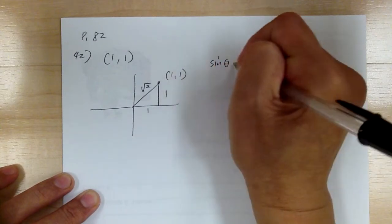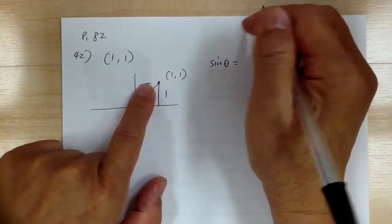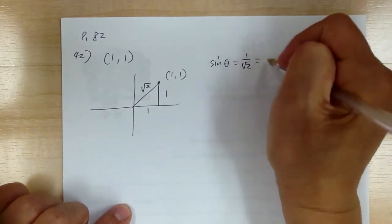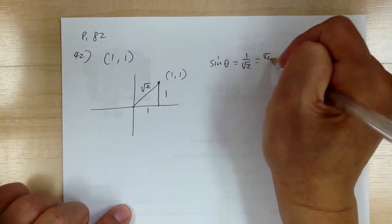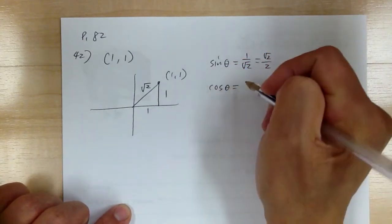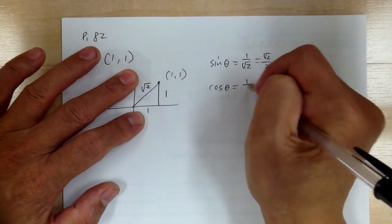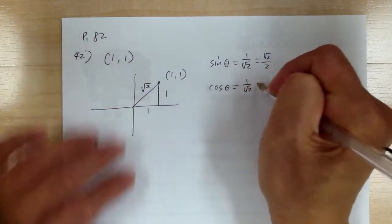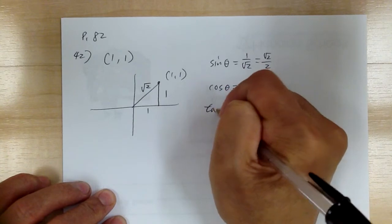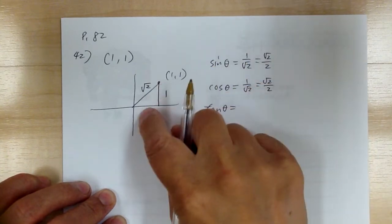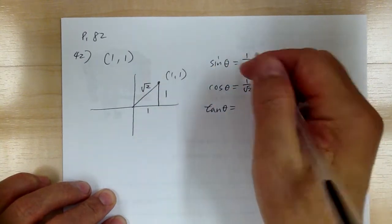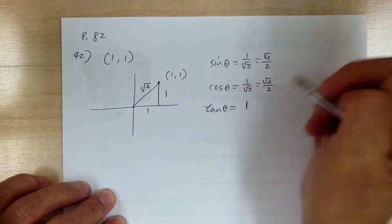Sin theta equals this over that, which is 1 over √2, so this equals √2 over 2. Cosine theta is this one over this, so it's 1 over √2, same thing. Then tangent theta: tangent is sin over cosine, so it's vertical over horizontal, giving you 1 over 1, which is 1.